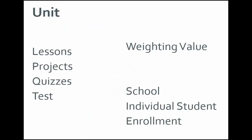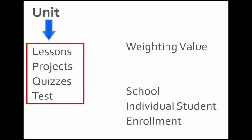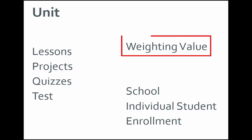A unit is made up of assignments. Ignitia has four assignment types, including lessons, projects, quizzes, and tests. Each assignment type has a weighting value that determines the assignment type's relevance to the overall course grade for the unit. Weighting values can be set at the school level, individual student level, and at the enrollment level.